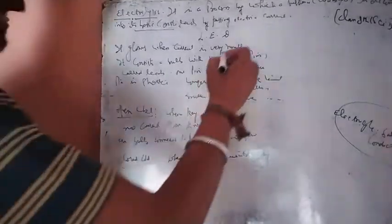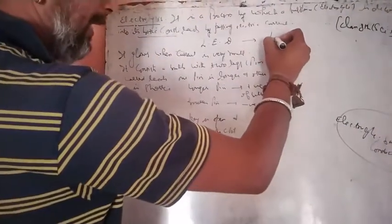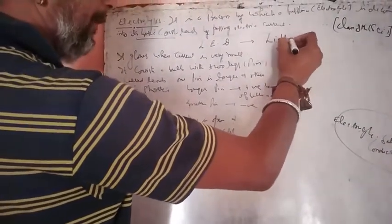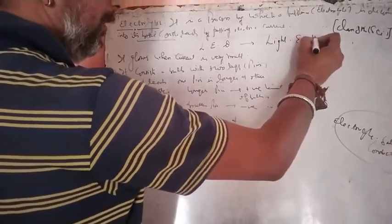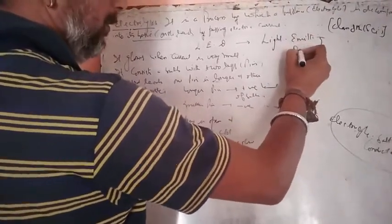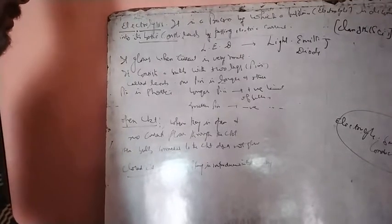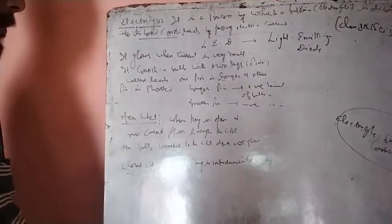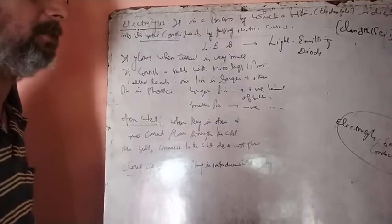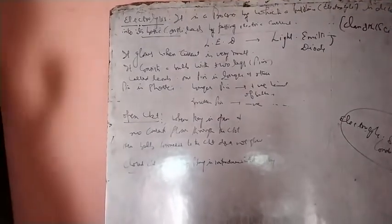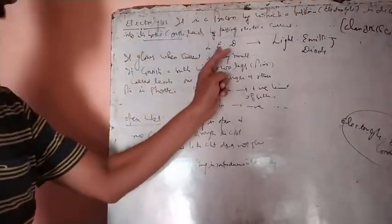The next one is LED. The LED has also been shown. What is the case? The light emitting diode will glow when the current is very small.